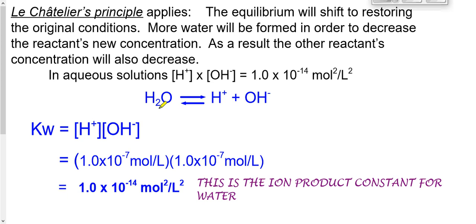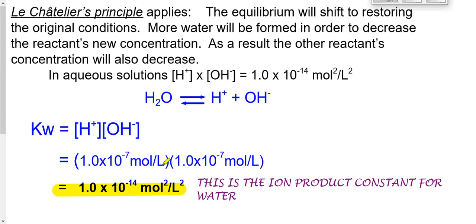In plain water we have 1×10⁻⁷ moles of hydrogen and 1×10⁻⁷ moles of hydroxide. The equilibrium expression — hydrogen concentration times hydroxide concentration — works out to 1×10⁻¹⁴. This number is called the ion product constant for water, and we call it Kw. We don't include the concentration of liquid water. You need to remember: Kw = [H+][OH-] = 1×10⁻¹⁴, because this number will ground all the math we do in this unit.